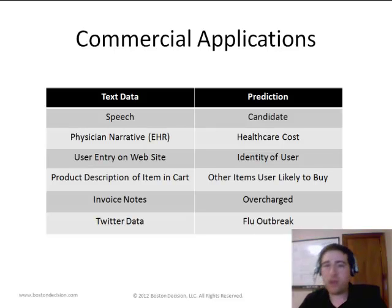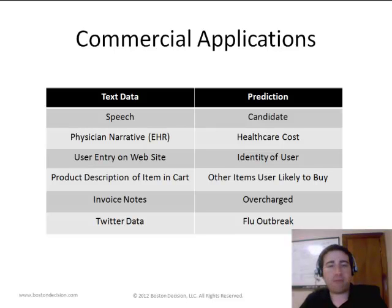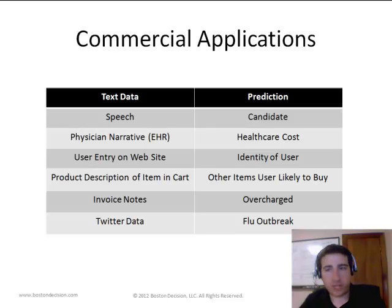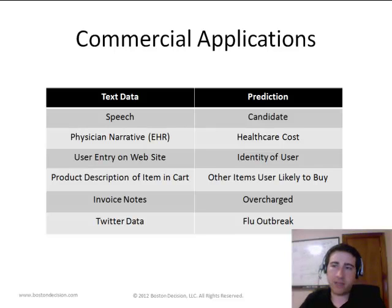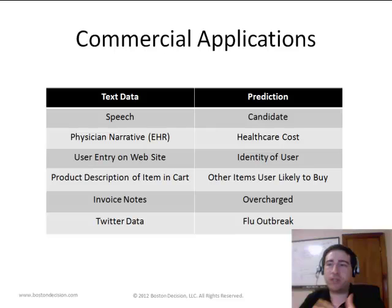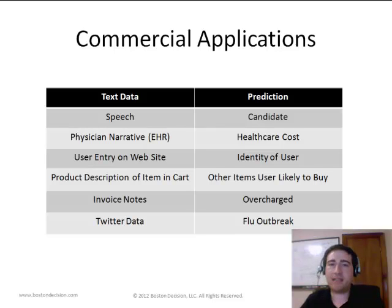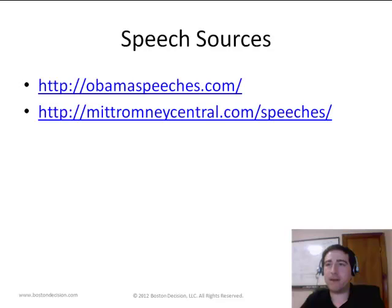We can look at product descriptions for items in an online shopping cart and use that to predict and identify cross-sell opportunities — what other items might this person be interested in. We could look at invoice notes from a consultant and identify whether we're being overcharged. Or we could look at Twitter data and use that to predict when a flu outbreak might be occurring, similar to what Google began doing with its search engine. Text data has a lot of information and we can use it in different ways to gain insight that wouldn't otherwise be there.